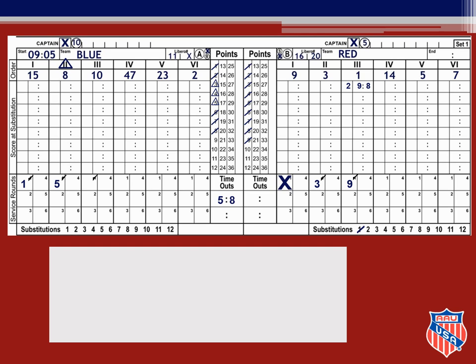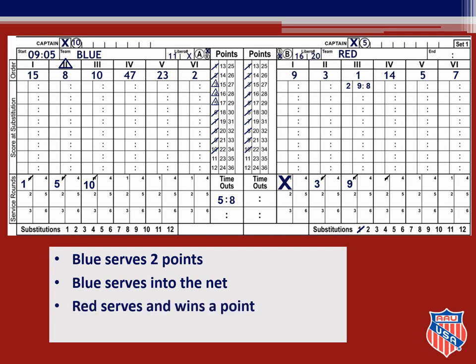Let's get back to the set we are keeping score on. The score is blue 8, red 9, and the current server is blue number 10. Number 10 serves for two more points for blue, so you slash points 9 and 10 in the points column, and then 10 serves the ball into the net. You enter the exit score of 10 in the check service round box and slash point 10 for red in their points column. The correct server for red, number 14, serves the ball, so you check the first service round box under her position. Red wins the ensuing rally, so you slash point number 11 in their points column. Red number 14 serves three more times and red wins a point on each; you slash numbers 12, 13, and 14 in the points column for red. The score is now red 14, blue 10.